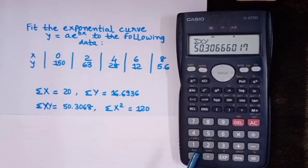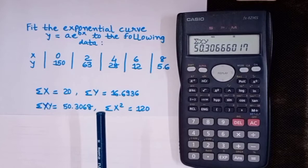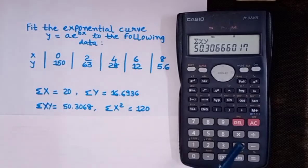In this video I'm not showing you how to solve this example step by step in detail. For that I've already uploaded a video, you can see that. Here I'm only showing you how to find out sigma x, sigma y, sigma xy, sigma x squared, and the final exponential curve y = ae^(bx), the values of a and b, using a calculator.